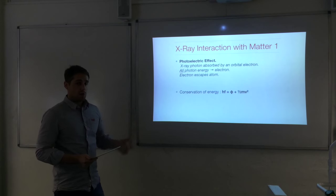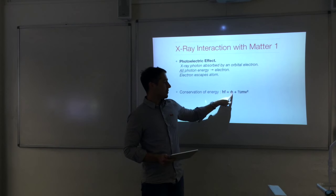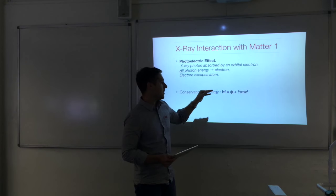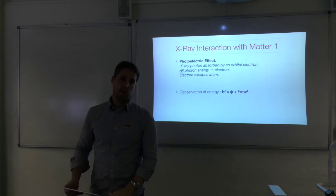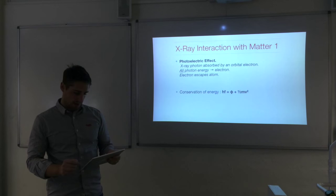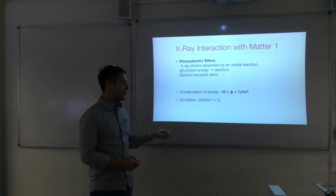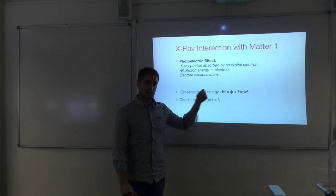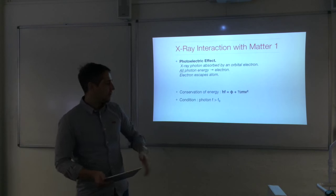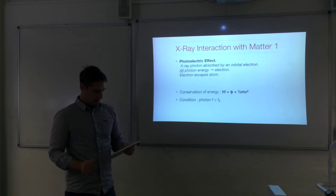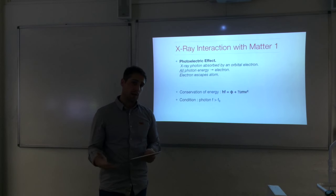From a conservation of energy point of view, the photon energy HF goes into the work function, giving the electron enough energy to escape the atom, and the remaining energy is turned into kinetic energy — half mv squared. You need to have photons with high enough energy, so the photon frequency needs to be larger than the threshold frequency F0. That's the first way in which x-rays can interact with matter and be absorbed.